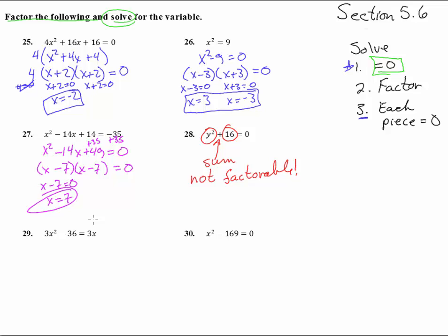Number 29. Get it equal to zero, so subtract 3x from both sides and we get 3x squared minus 3x minus 36 equals zero. Good, that zero out there makes factoring worthwhile. Now for factoring, we pull out the greatest common factor. We see there 3 times x squared minus x minus 12.